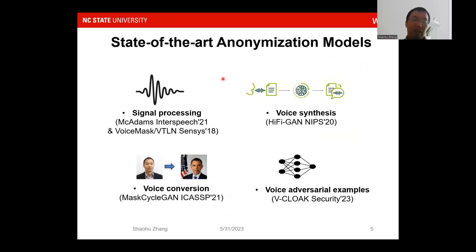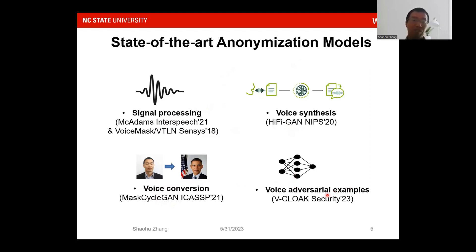State-of-the-art anonymization models include four categories. The first is signal processing, which alters signals using methods such as McAdams coefficients and vocal tract length normalization. The second is voice synthesis. The third is voice conversion, which converts one speaker's voice to another target speaker's voice. The fourth is voice adversarial examples, which use adversarial machine learning to add audible noise into audio to generate adversarial examples.